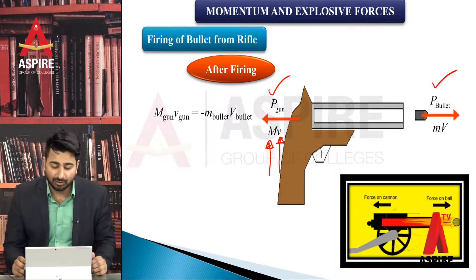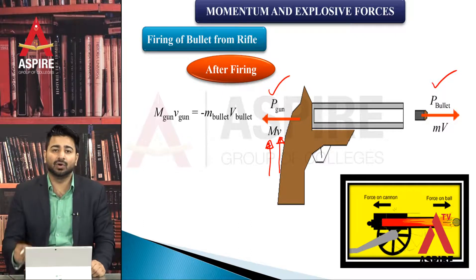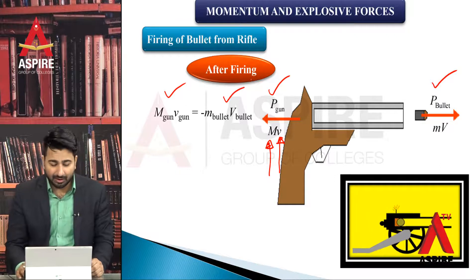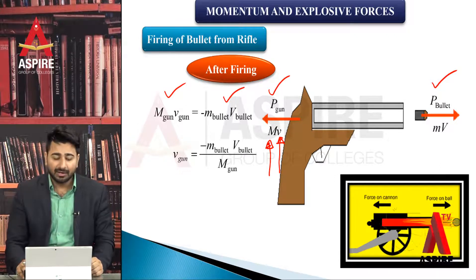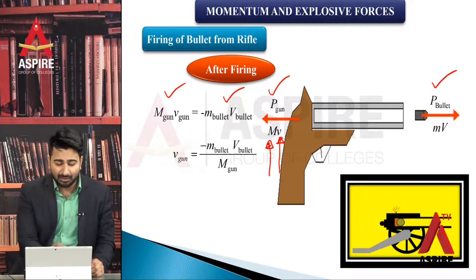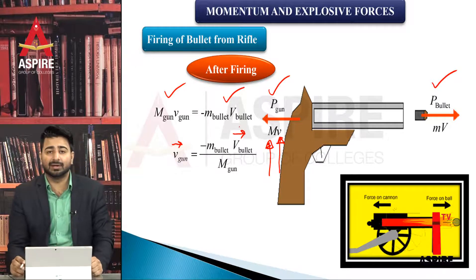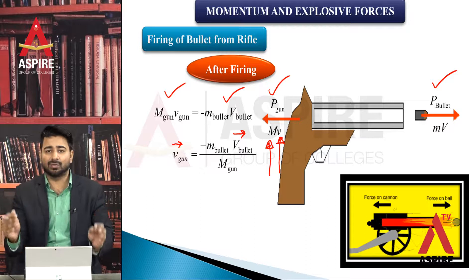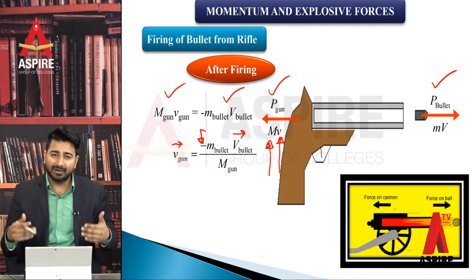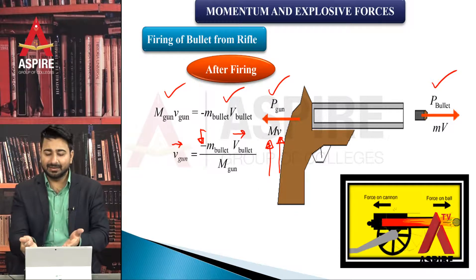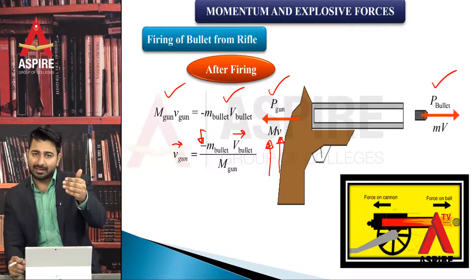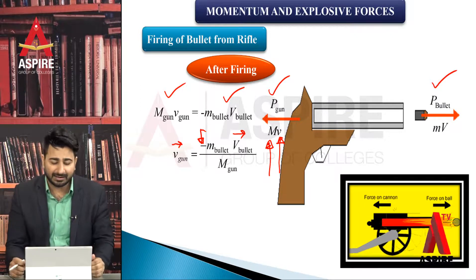The gun's velocity in the opposite direction is called the recoil velocity. The mathematical relation in terms of mass and velocity gives the formula for recoil velocity of the gun as: V gun equals minus M bullet times V bullet divided by mass of gun. The minus sign confirms the opposite direction, which is verified both by the diagram, the animation, and practically — when a bullet is fired, the gun recoils slightly.